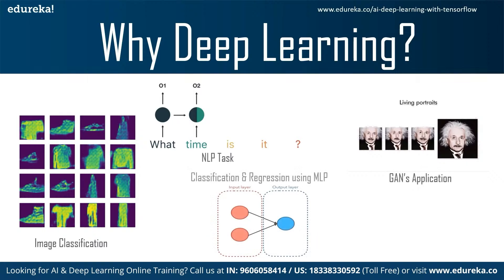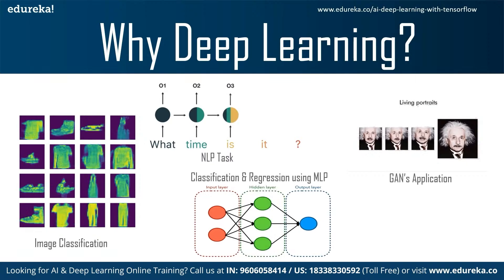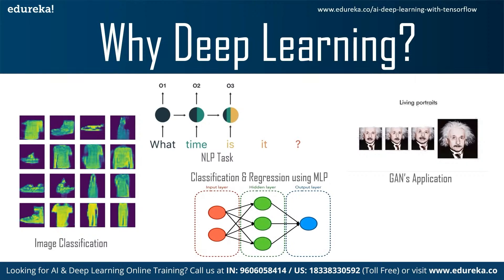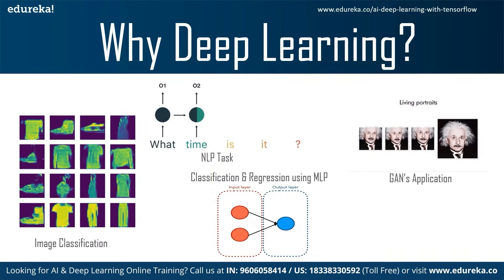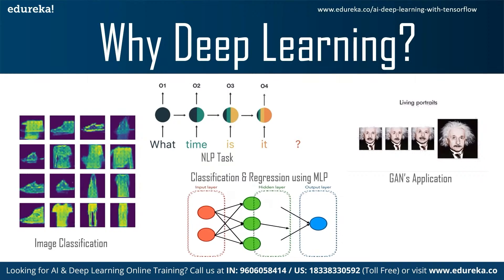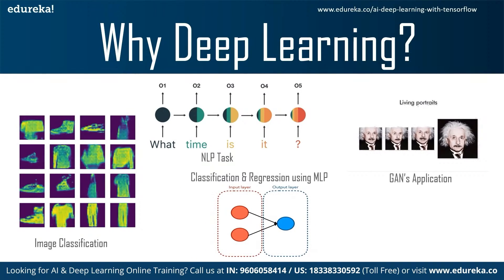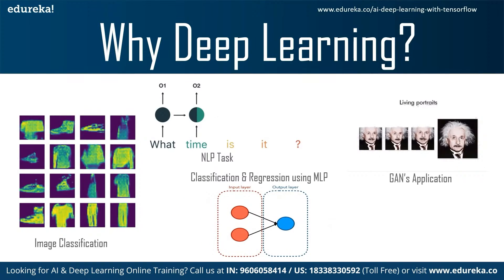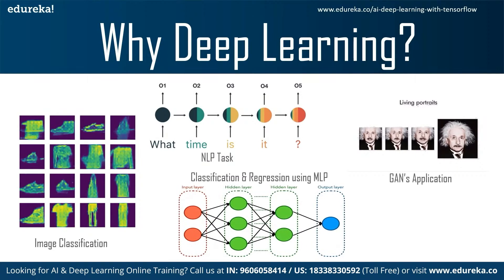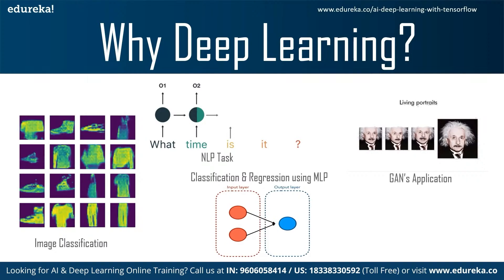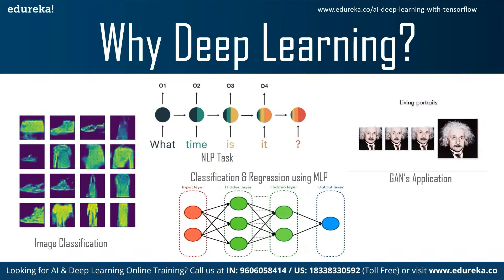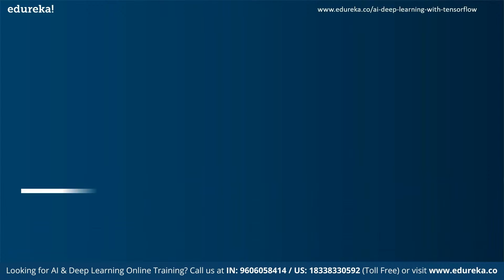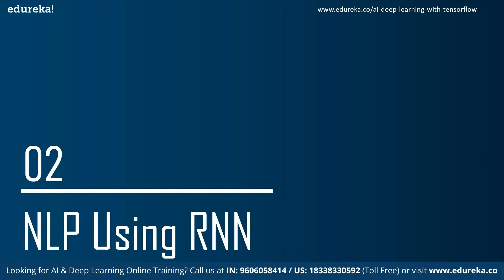Finally, we have classification and regression tasks using multilayer perceptrons. In machine learning, we had algorithms like decision trees, random forest, linear regression, or logistic regression. But when we perform classification using MLP or multilayer perceptron, we get very high accuracy even compared to SVM and decision trees. So now that we know what deep learning is and why we use it, let's understand how we can process natural language data using RNNs.